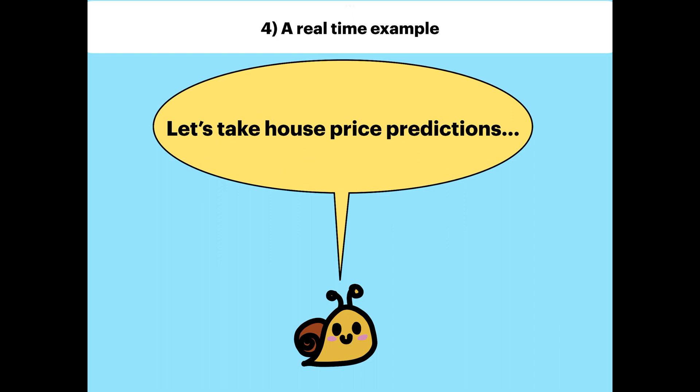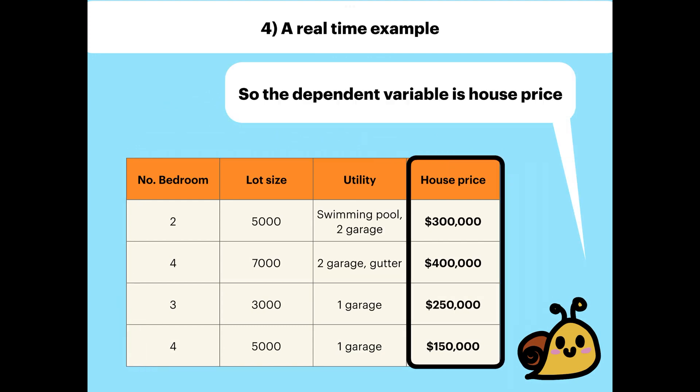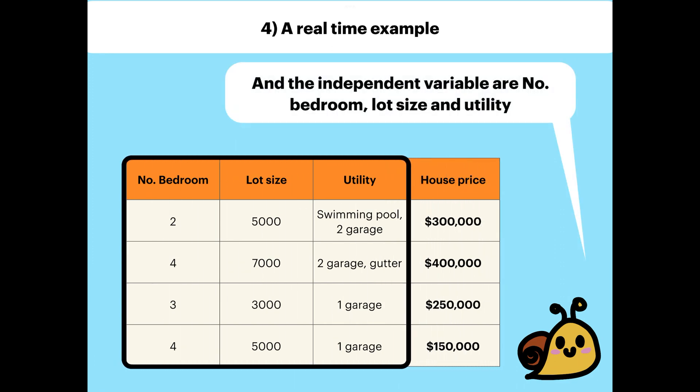Let's take a real-time example — house price predictions. We are trying to predict the house price depending on number of rooms, lot size, and utility. So the dependent variable here is the house price, since we are trying to predict it. And the independent variables are number of rooms, lot size, and utility, since these variables are used to predict our dependent variable, house price.